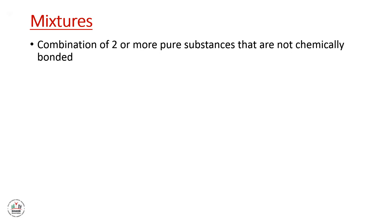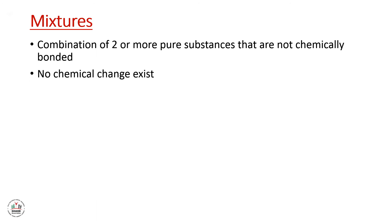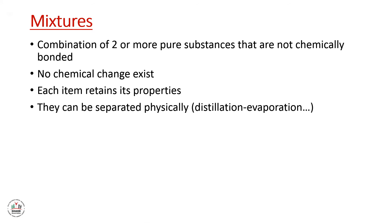The second part of matter classification is mixtures. A mixture is a combination of two or more pure substances that are not chemically bonded. In a mixture, no chemical change exists and each item retains its properties. Mixtures can be separated physically, for example by distillation or evaporation.